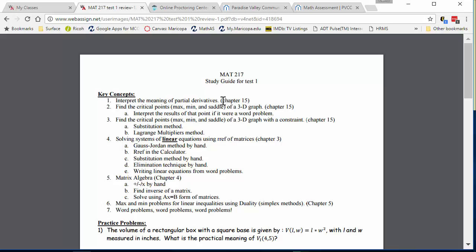Something like that. Then you're going to have to find critical points, finding mins, maxes, and saddles of a 3D graph, and then you're going to have to interpret the results of that point if it were a word problem. So if you had a word problem, you may have to interpret the values of that. So the idea here is finding critical points, mins, maxes, and saddles of unconstrained problems. So that is 15.3.